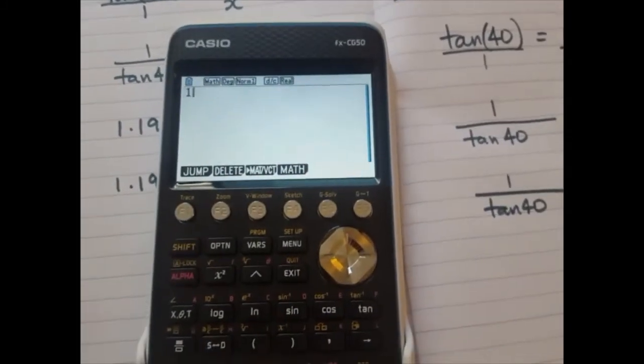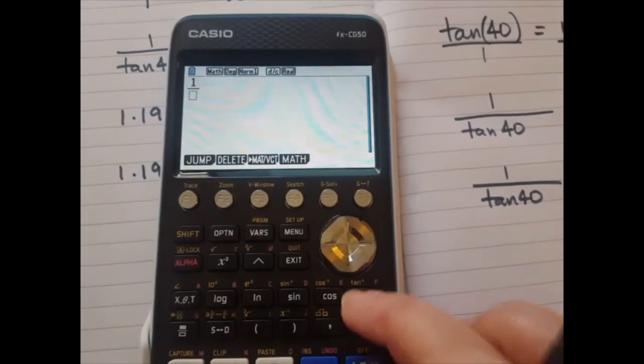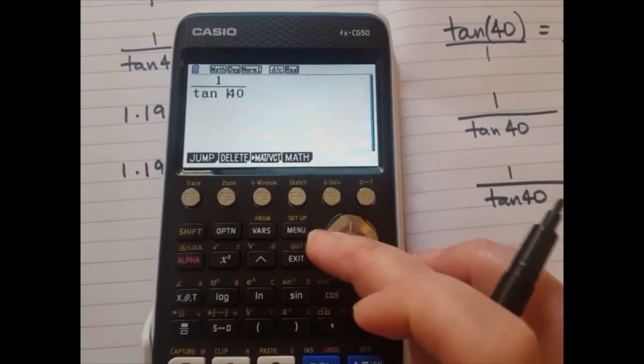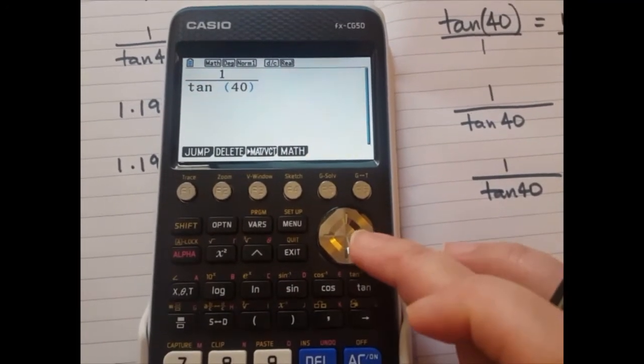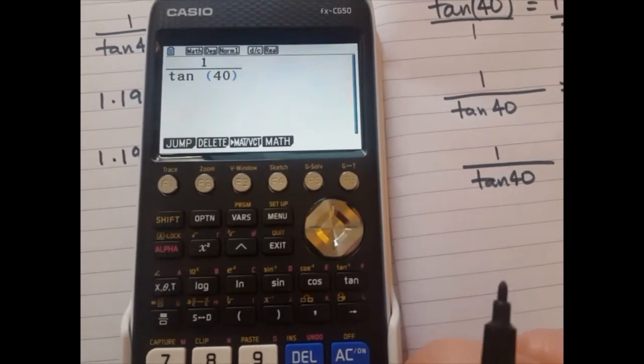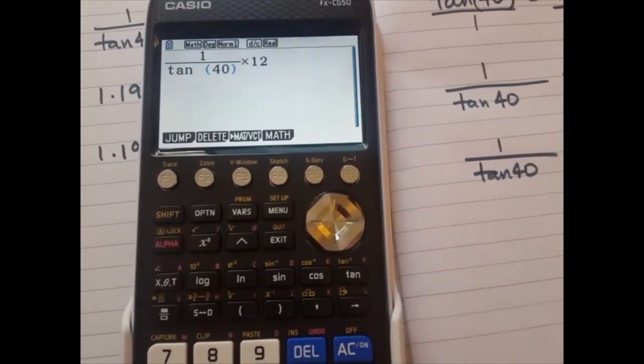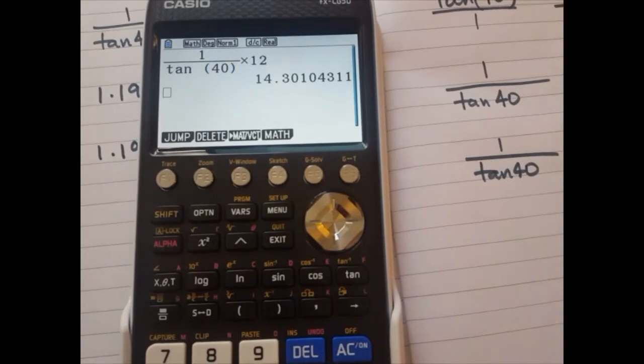Just type in the fraction 1 over tan 40. Now on your calculators it's going to have brackets. Use the arrow key to move across and then you go times 12. Get the answer, write it down.